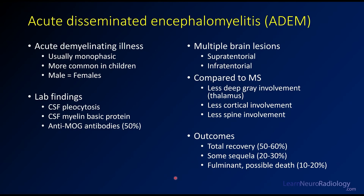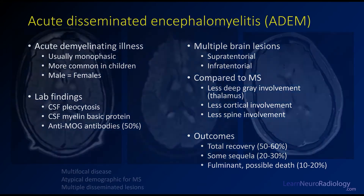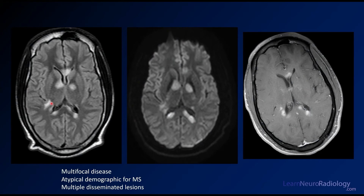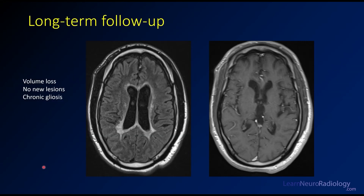Death is even possible in some patients if it proceeds to a fulminant stage. Looking at the same case again, you see FLAIR abnormalities in the basal ganglia and corpus callosum with abnormal diffusion and enhancement. This could be MS, but it's pretty fulminant because you have a lot of enhancing lesions. It's also an atypical demographic — a younger person. On long-term follow-up, this patient has volume loss, no new lesions, but chronic gliosis. The ventricles are too large and the white matter around the ventricles is pretty gliotic — T2 bright — but no enhancement at this point.